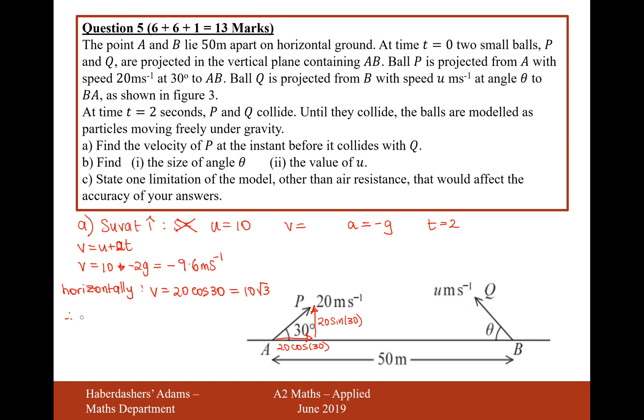Therefore, the velocity, the magnitude of the velocity, is going to be the square root of 9.6 squared add 10 root 3 squared. And if we type that all into the calculator, then we're going to get 19.8 meters per second. Now, given that the question says find the velocity of p at the instant before it collides with q, we also need to provide it with some direction. This, at the moment, is just a speed. We need to, if we want to give a final answer in a velocity, we need to give a direction.